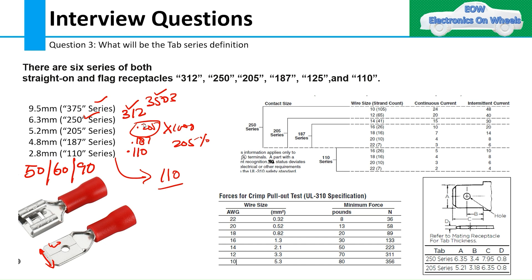This is how the tab series definition comes out. Other aspects of tab selection include what type of positive lock and negative lock the terminal has. But for now I have covered what tab series means, how it is derived, and what male and female terminals are.